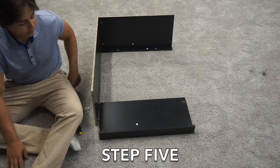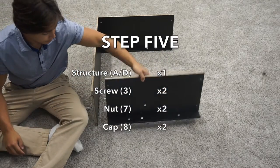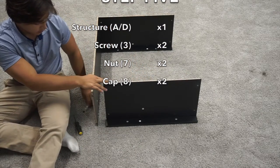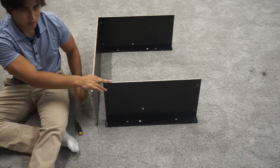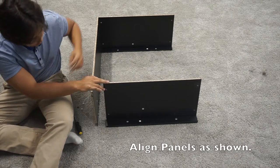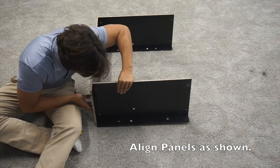In step five, you will now want your other A panel, the one with the D attached to it. Two more screws, two more nuts, and two more caps. Simply slide it on just as you did last step.